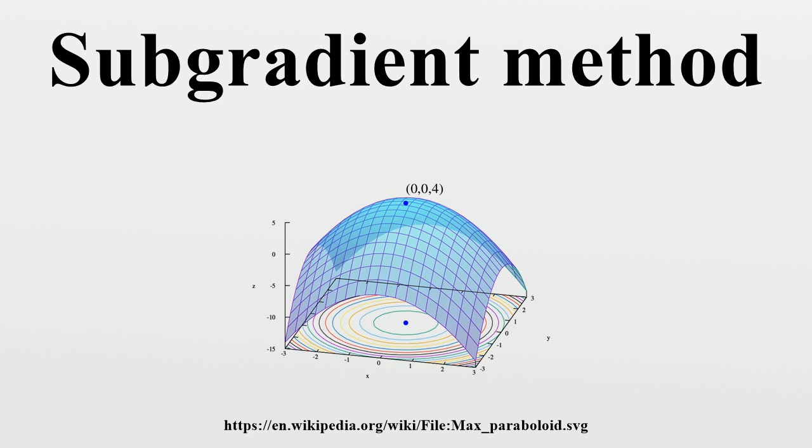Many different types of step-size rules are used by subgradient methods. This article notes five classical step-size rules for which convergence proofs are known: constant step size,